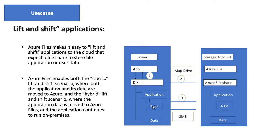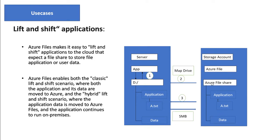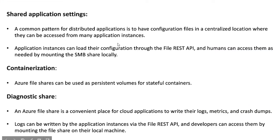You can store application data like text files and folders, and the same thing is replicated here via the SMB protocol. That is one use case. The next use case is shared application settings — for example, shared configurations used by multiple applications. For that purpose, we can also use Azure File Share.